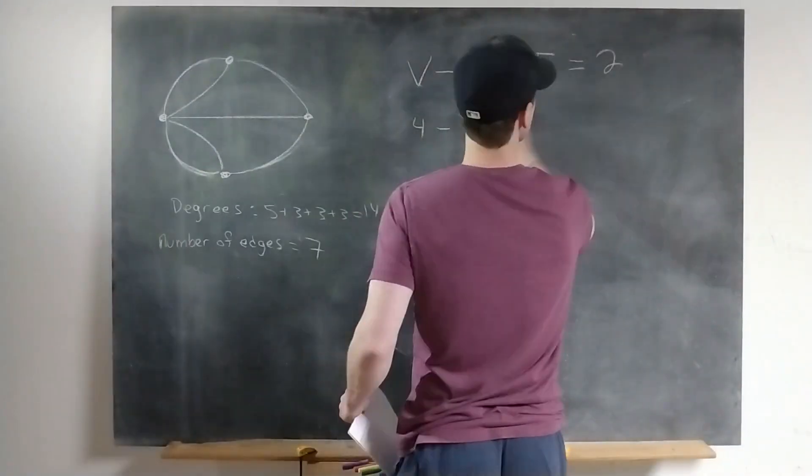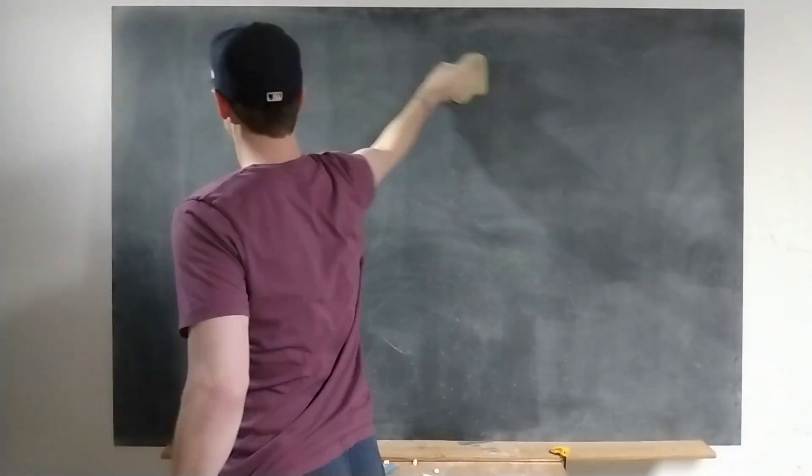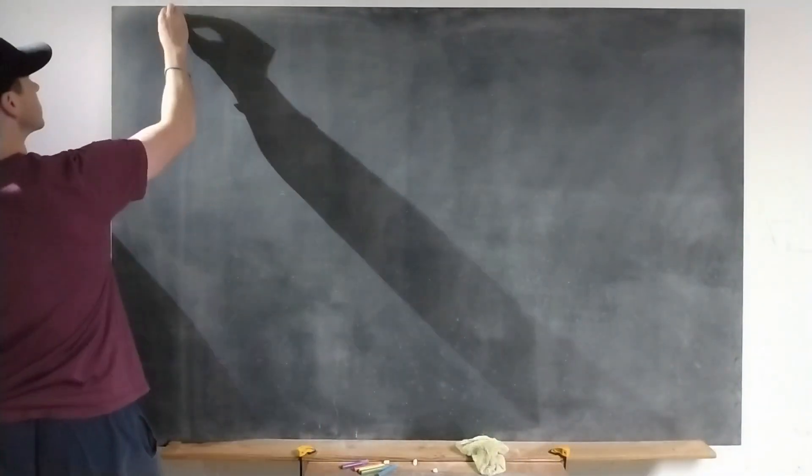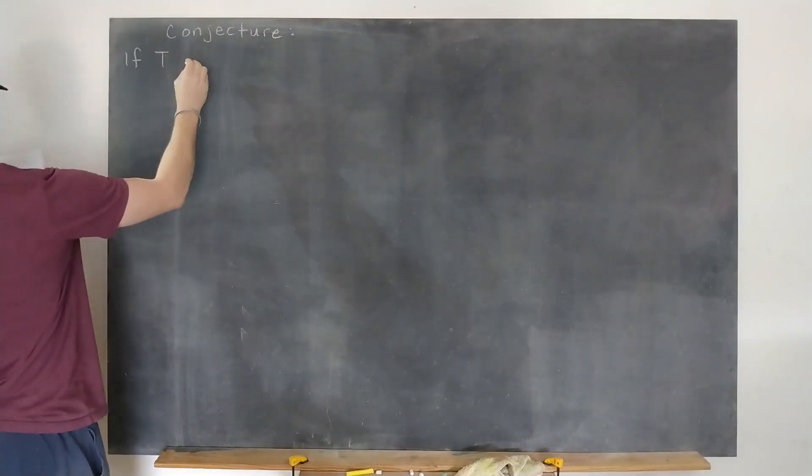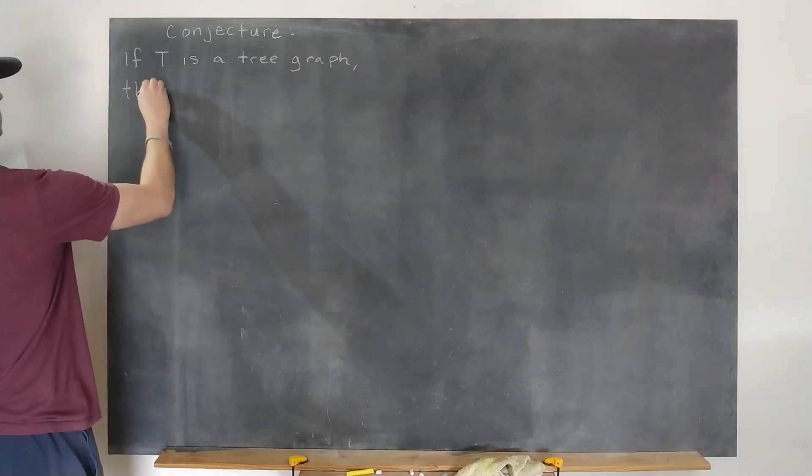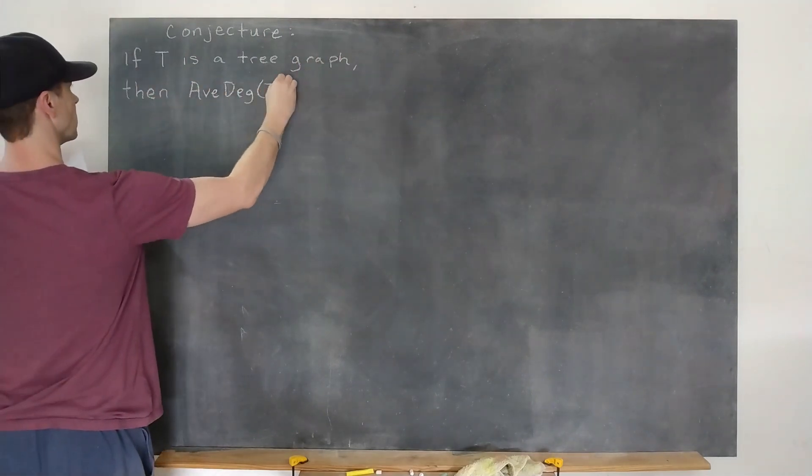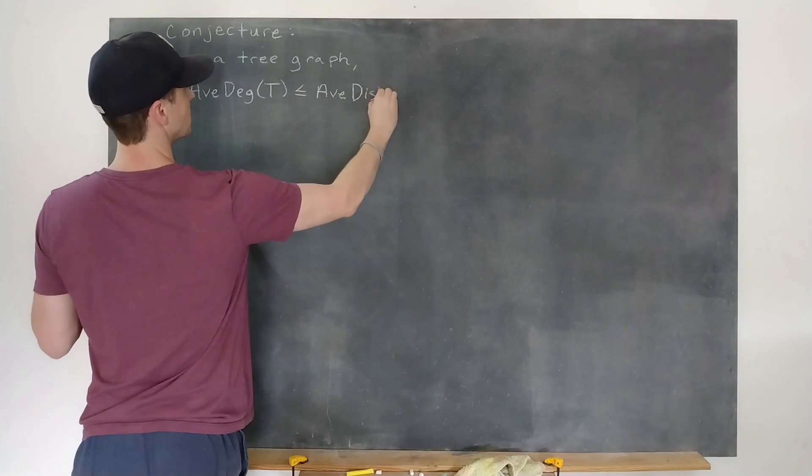So now that we know a little bit about what graph theory is, here is a simple graffiti conjecture. If t is a tree graph, then the average degree of t is no more than its average distance.